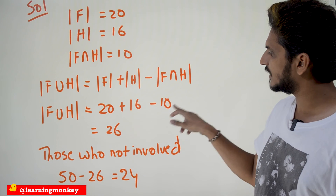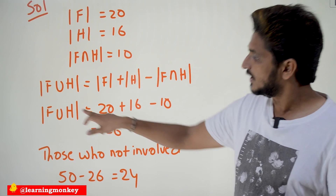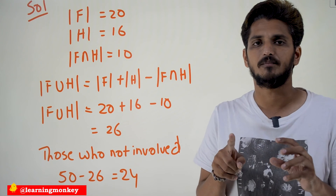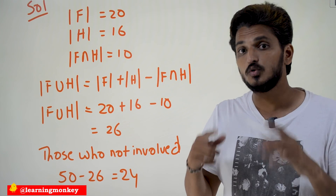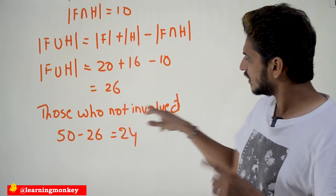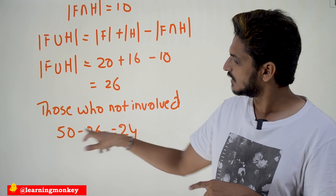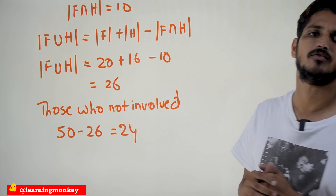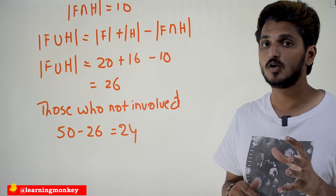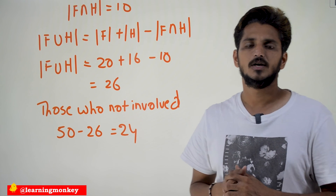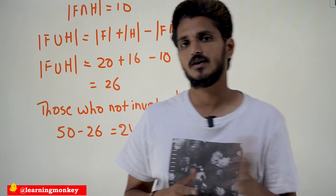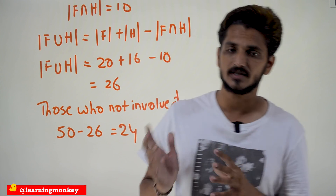That gives us 26 students who play any one of the games. But we need the students who don't play any game, which is total minus 26: 50 − 26 = 24. So 24 students are not involved in any of the games. These are the types of examples we are going to get in our exams. Hope you understand these examples.